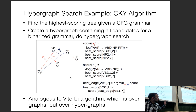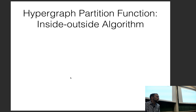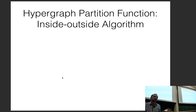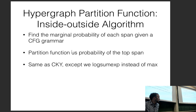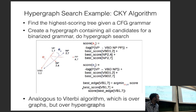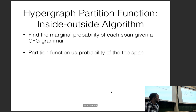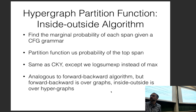In addition to finding the best path through a hypergraph, we also want to calculate the partition function — for the same reason we did in CRFs: to maximize the likelihood of the true parse relative to all others. We find the marginal probability of each span given a CFG grammar, and the partition function is the probability of the top span. This is the same as CKY but replacing the max operation with log-sum-exp, exactly as we did for CRFs.